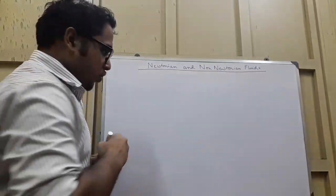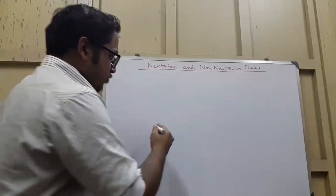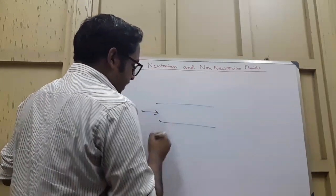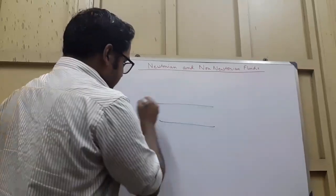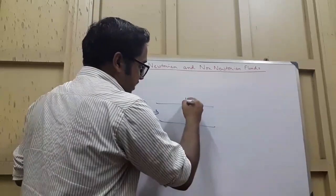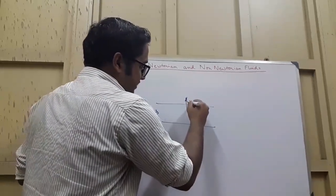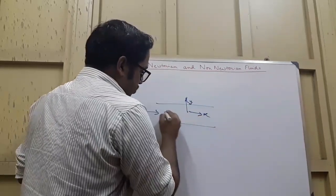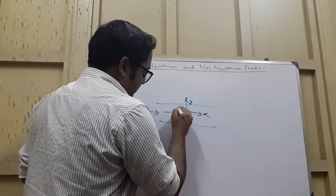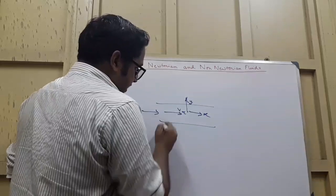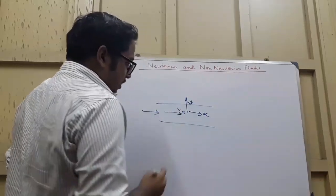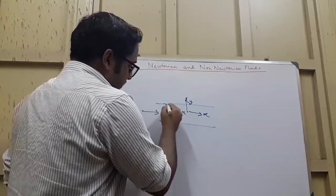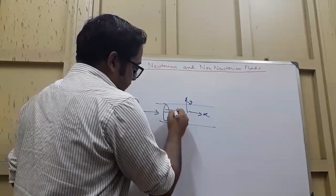Before starting with fluid behavior, we need to understand a few basics. Suppose a fluid is flowing through a pipe — let's draw a pipeline. We consider the y-axis and x-axis convention, where vx is the velocity in the x-direction and y is the perpendicular direction. When the fluid flows, the velocity profile looks like this.